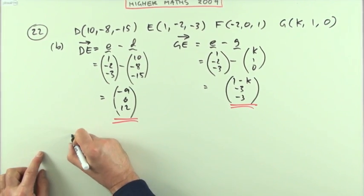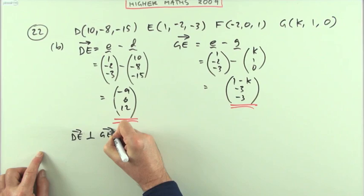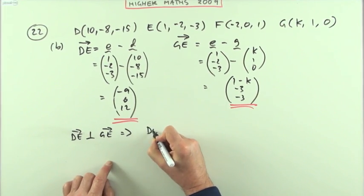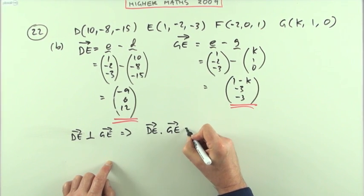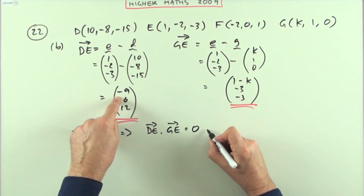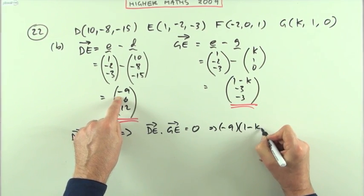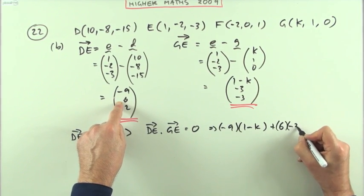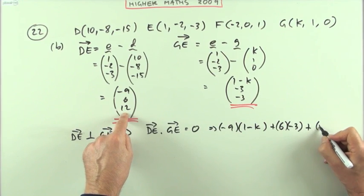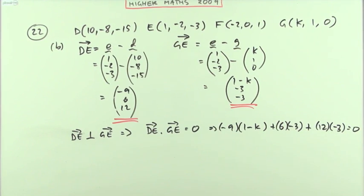So DE perpendicular to GE means that DE dot product GE should equal zero. What is the scalar product? That means that -9 times (1 minus k) plus 6 times -3 plus 12 times -3 should equal zero.